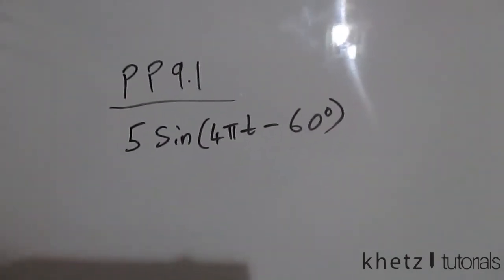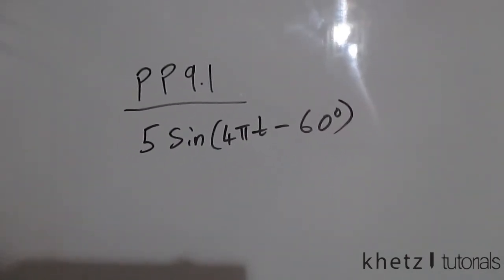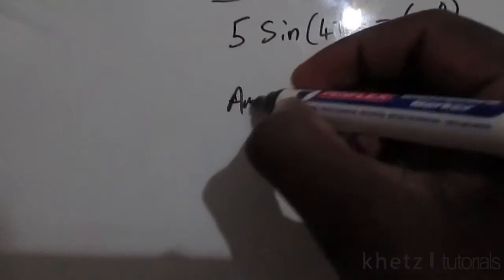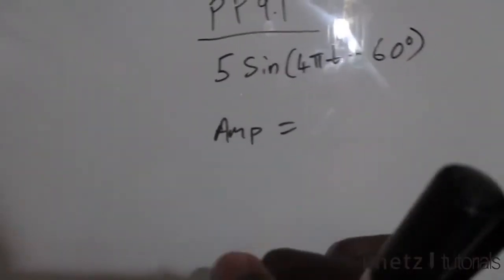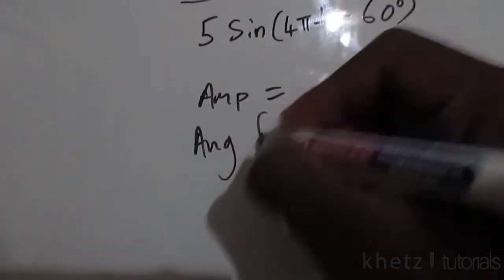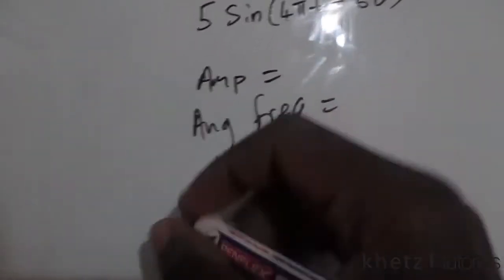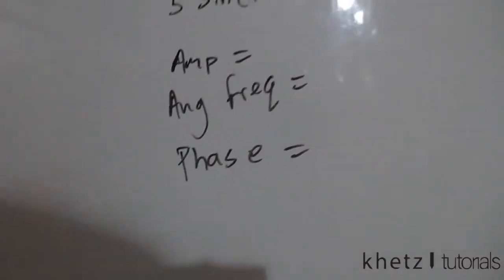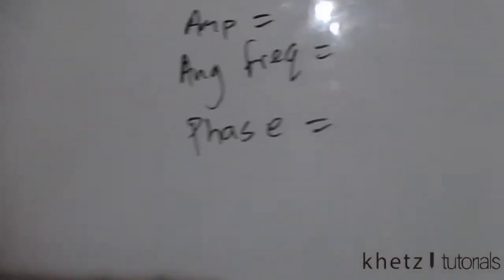Welcome to Ketz tutorials and in this video I'll be doing practice problem number one. Given the sinusoid, we are asked to find the amplitude, the angular frequency, the phase, and the natural or fundamental frequency.